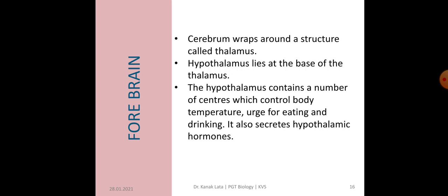The cerebrum wraps around a structure called thalamus, which is the major coordinating center for sensory and motor signaling. Next part of the brain is hypothalamus, which lies at the base of the thalamus. Hypothalamus contains a number of centers which control body temperature, urge for eating and drinking. Hypothalamus also secretes hypothalamic hormones.